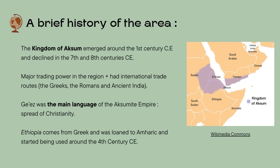The Kingdom of Aksum in today's northern Ethiopia emerged around the first century CE. It was a major trading power in the region and had many international trade routes with the Greeks, the Romans, and ancient India. Its influence even spread to Eritrea and southern Arabia. Ge'ez was the language of the Aksumite empire and played a crucial role in the spread of Christianity in the region. The Kingdom of Aksum eventually declined in the 7th and 8th century CE, partly due to shifts in trade routes and the rise of Islamic power in the region. It's interesting to note that the word Ethiopia comes from Greek and was loaned to Amharic, starting to be used around the 4th century CE.